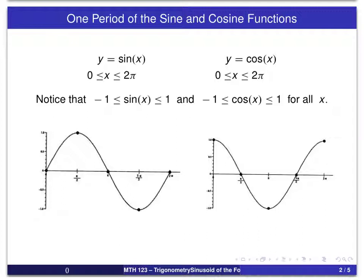things like the tick marks on the x-axis are in terms of pi. So that one there is 3 pi over 2, that's 2 pi, this is pi over 2, and so forth. This basically represents one complete cycle of the sine graph and of the cosine graph.